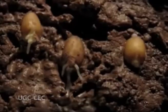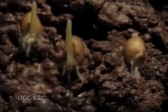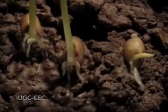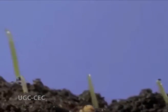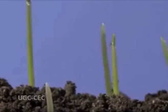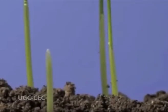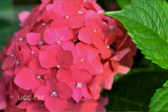The shoot arises as a prolongation of the plumule — one end of the embryo. It grows and bends towards light, that is, it is positively phototropic, and away from gravity, that is, negatively geotropic. It divides into nodes and internodes and bears leaves, branches, and flowers.